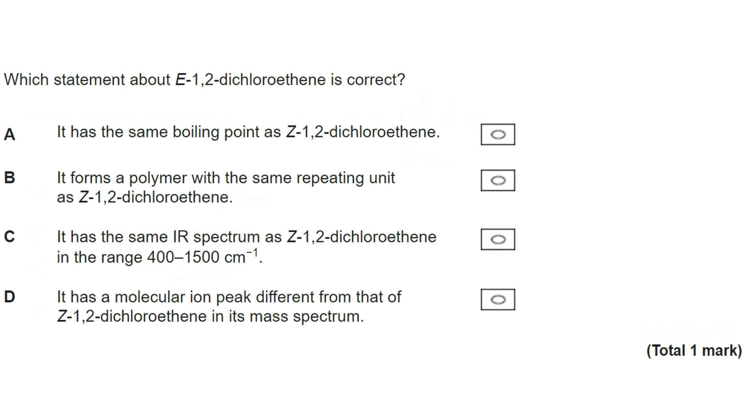Next question. And on this, we are looking at geometrical isomers. We've got E-1,2-dichloroethene. Let's take a look through and see what we can disregard. Well, between 400 and 1500 cm to the minus one on an infrared spectrum is the fingerprint region. And the most important principle of the fingerprint region is that it's unique to a particular compound. So for that reason, the fingerprint region would never be the same for those two. There would be some differences. So that's not the answer.